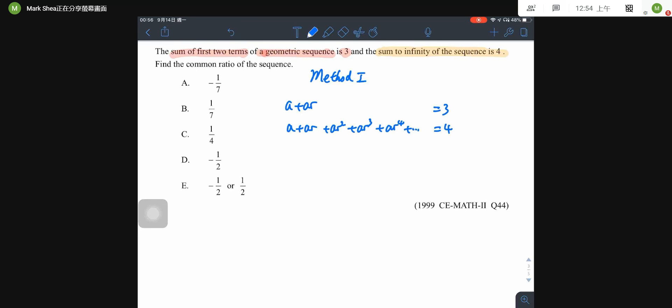Then if you do the subtraction, you may find out the first two terms are cancelled. So we have ar squared, ar to the power of 4, and so on, equal to 1.